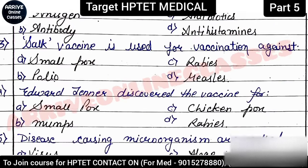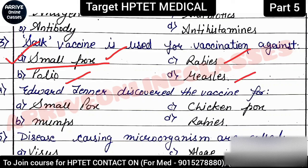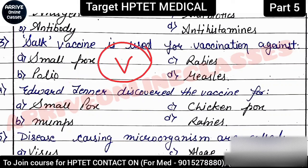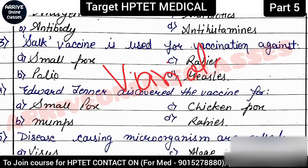Next question: 'Stock vaccine is used for which disease?' The correct answer is smallpox. Students should note that smallpox, rabies, polio, and measles — all four are viral diseases. Polio is caused by poliovirus, rabies by rabies virus, and smallpox is caused by Variola virus.